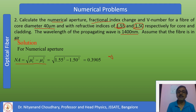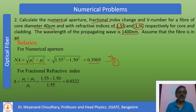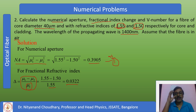Numerical aperture NA = sqrt(mu1² - mu2²). All values are given, so substituting mu1 = 1.55 and mu2 = 1.50, we calculate the numerical aperture. For fractional refractive index change, delta = (mu1 - mu2) / mu1. Substituting 1.55 and 1.50, we get the fractional refractive index change. From this, the numerical aperture can also be calculated using another formula.